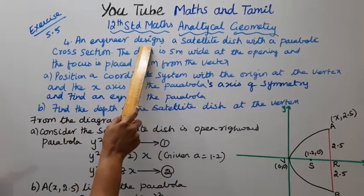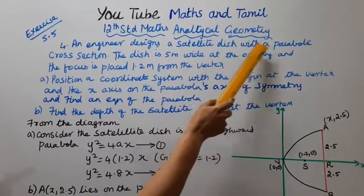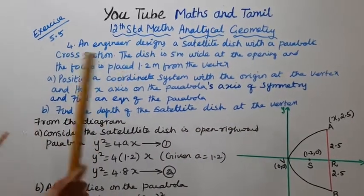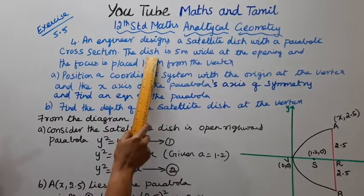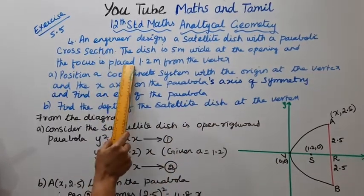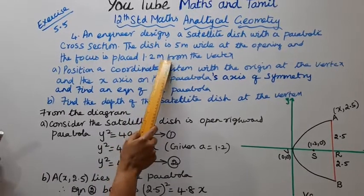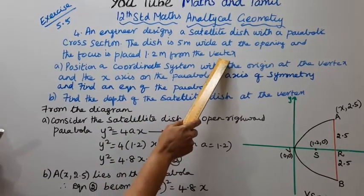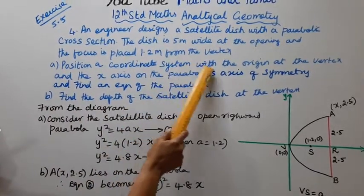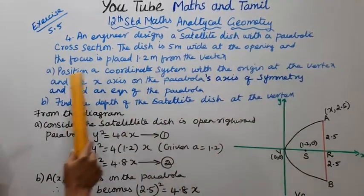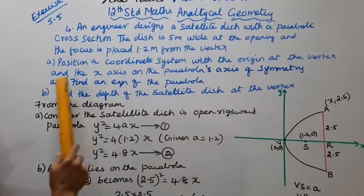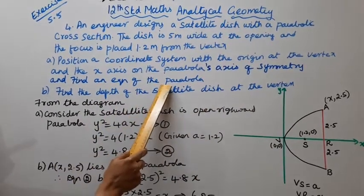An engineer designs a satellite dish with a parabolic cross section. The dish is 5 meters wide at the opening and the focus is placed 1.2 meters from the vertex. The first question is: position a coordinate system with the origin at the vertex and the x-axis on the parabola's axis of symmetry, and find an equation of the parabola.